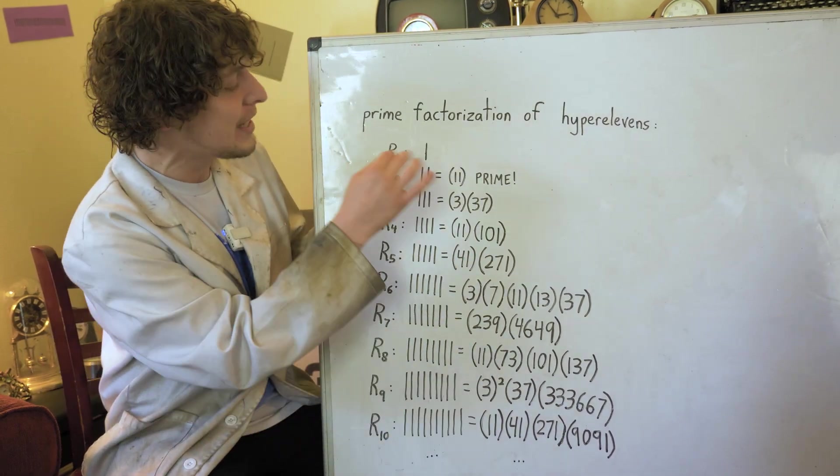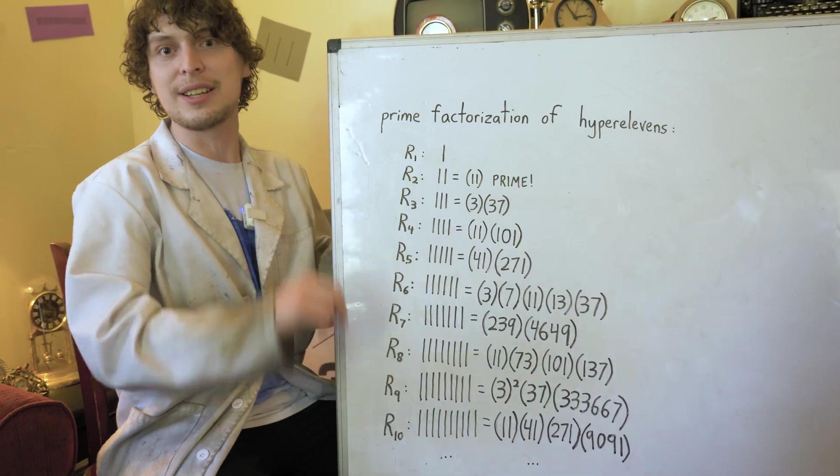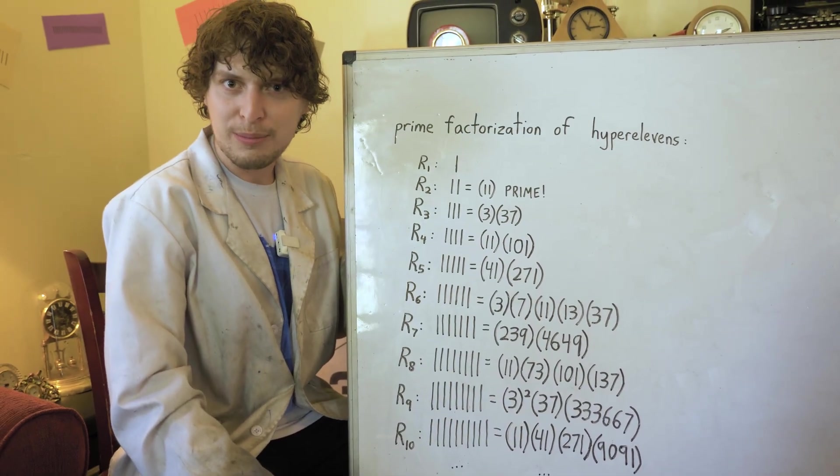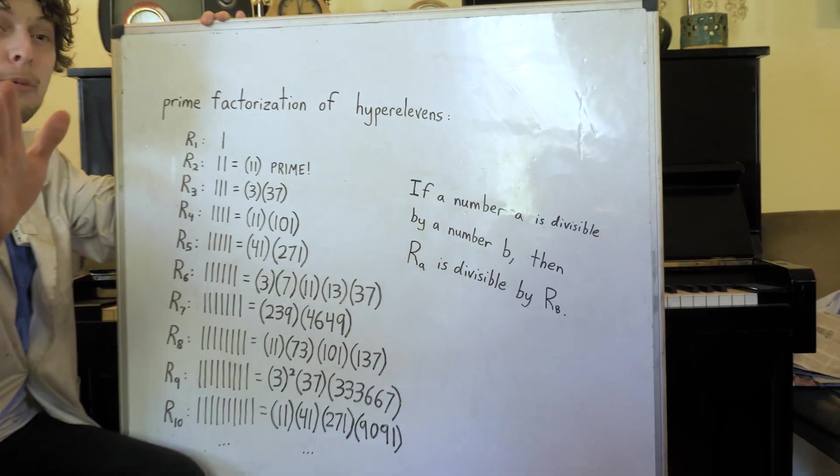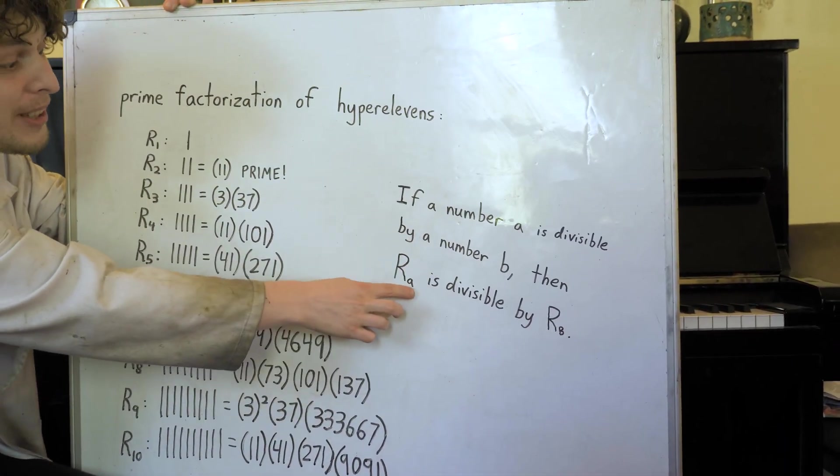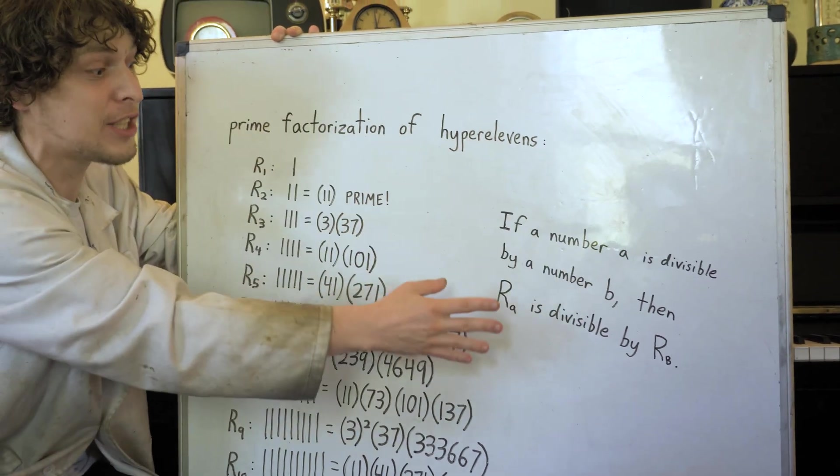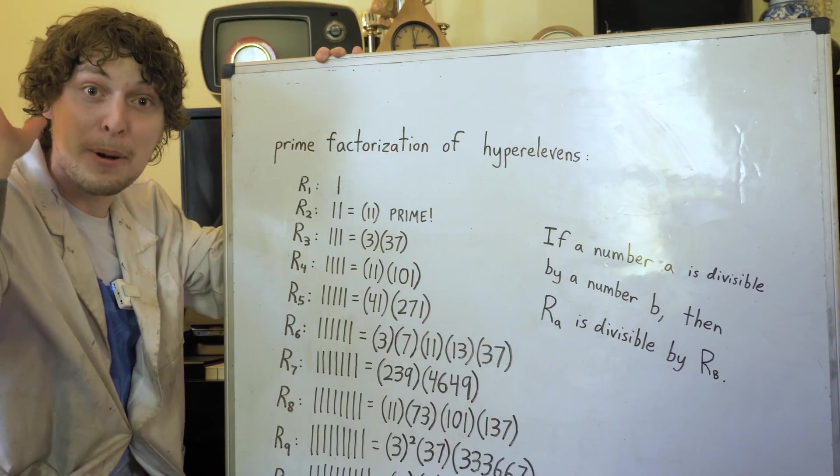And this brings us to a magical rule. It turns out that if any number A is divisible by another number B, then hyper 11 number A will be divisible by hyper 11 number B.